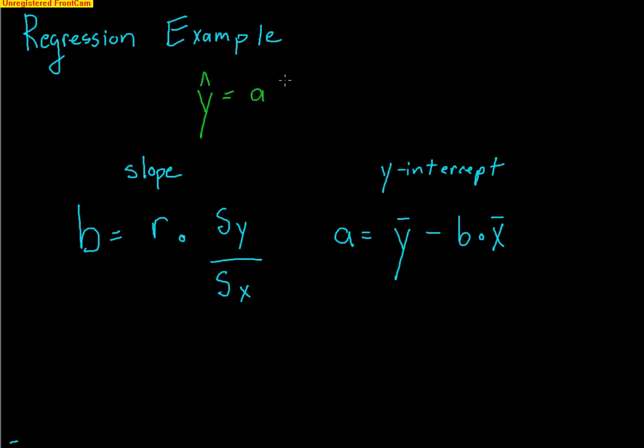y hat equals a plus bx. Now, this equation is meant to take an x value and predict a y value. It does not work the other way around. We cannot take an actual y value and work backwards to predict the x value.